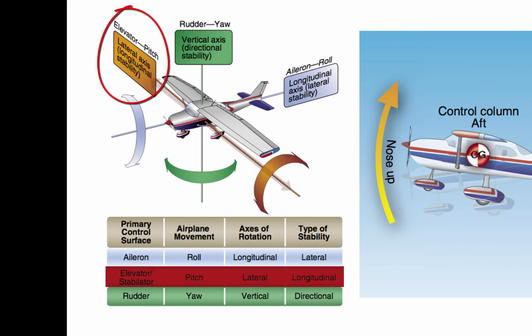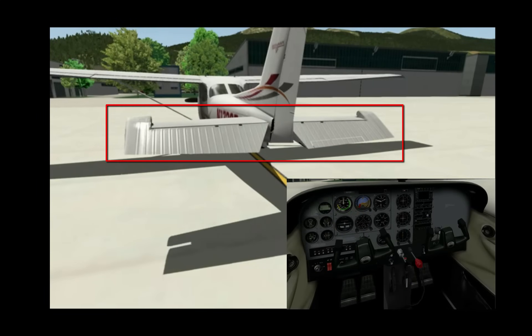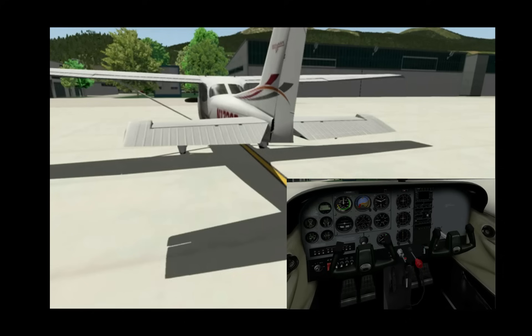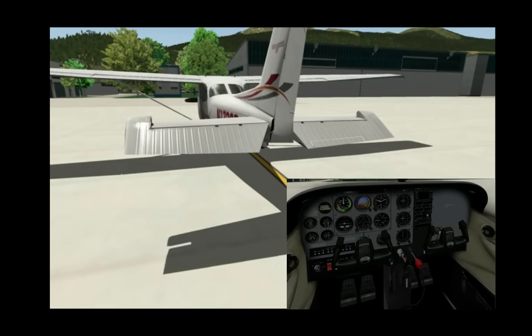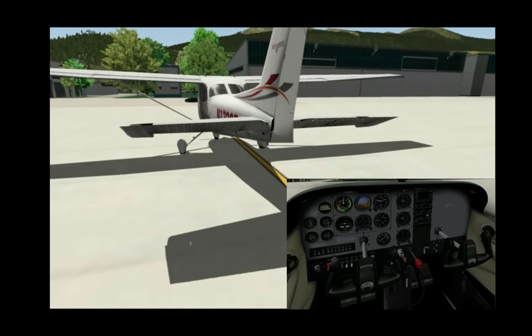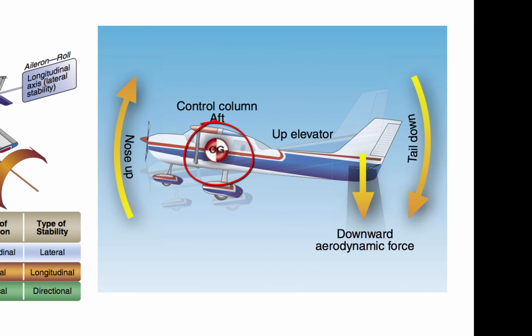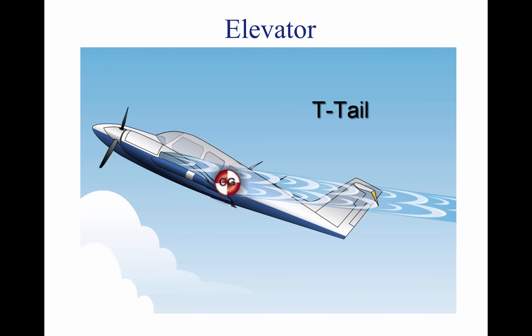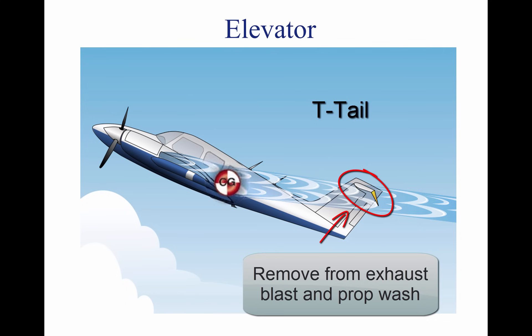The elevator controls pitch about the lateral axis of the airplane. The elevator, located on the trailing edge of the horizontal stabilizer, is controlled by pushing the control stick either forward, which causes the elevator to move down and the nose to pitch down, or back, which causes the elevator to move up and the nose to pitch up. Pitching the aircraft happens about the plane's center of gravity, labeled CG. The elevator on this plane is the T-tail type, meaning the elevator is positioned high on the vertical stabilizer so as to remove the horizontal stabilizer from exhaust blast and prop wash.